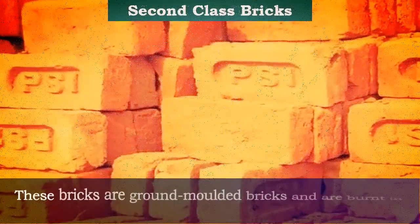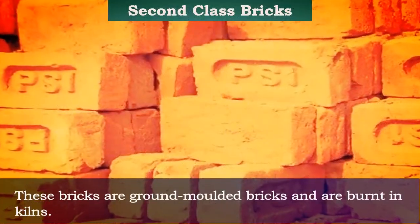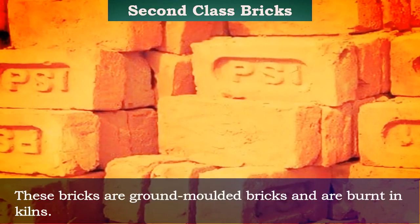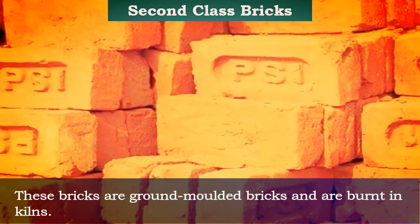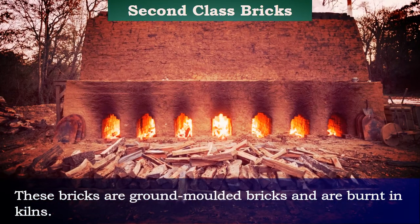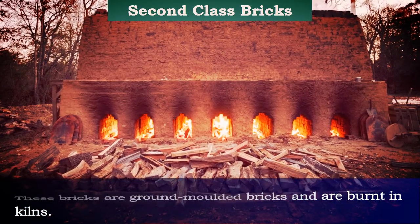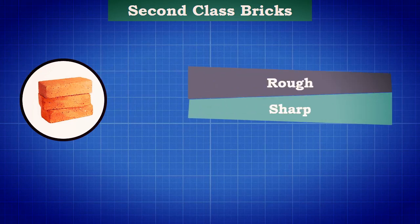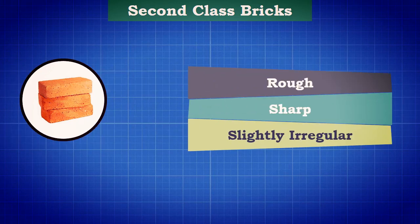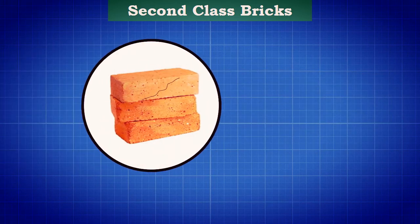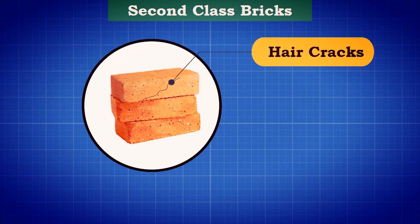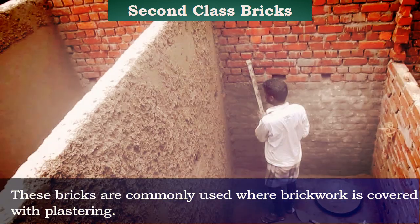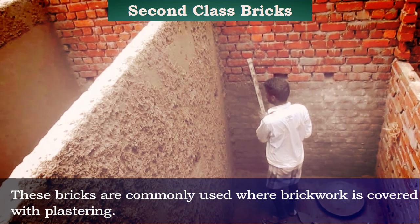Second-class bricks are ground-molded bricks and are burnt in kilns. The surface of these bricks is rough, sharp, and also slightly irregular. These bricks may have hair cracks and are not uniform. They are commonly used where brickwork is covered with plastering.